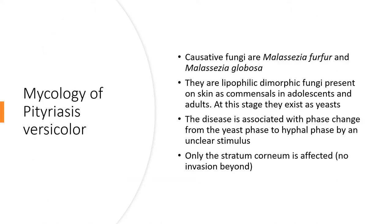When we talk about the etiology of Pityriasis Versicolor, the causative fungi are Malassezia furfur and Malassezia globosa — those are the two common fungi. These are lipophilic dimorphic fungi, meaning they favour a lipid environment, and they can grow as yeast and also as hyphae.